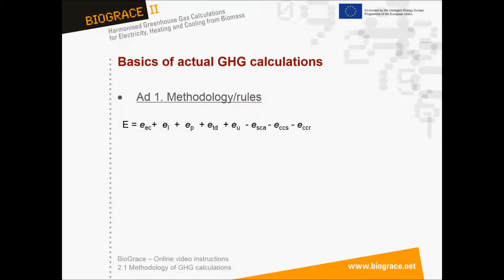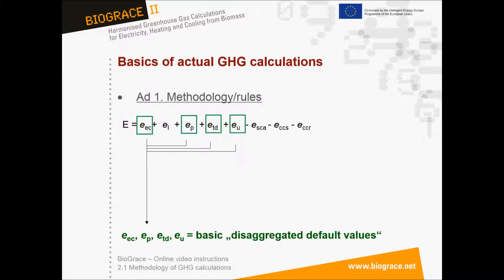The methodology in the Staff Working Document contains a formula to calculate the greenhouse gas emissions from solid and gaseous biomass. In this formula, the capital E represents the total emission from the use of the fuel before energy conversion. EEC, EP, ETD and EU are the four contributions to the total emission for which disaggregated default values have been defined. EEC is the emission from the extraction or cultivation of raw materials; EP is the emission from processing; ETD is the emission from transport and distribution; and EU is the emission from the fuel in use, due to final combustion.